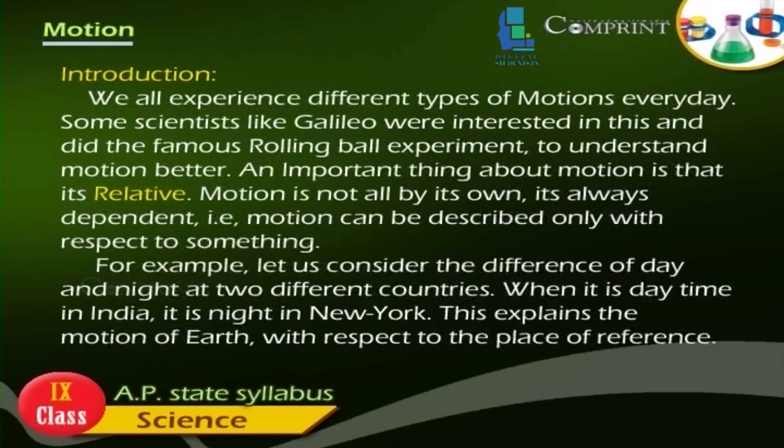Motion is not all by its own, it is always dependent. That is, motion can be described only with respect to something. For example, let us consider the difference of day and night in two different countries. When it is day time in India, it is night in New York. This explains the motion of Earth with respect to the place of reference.